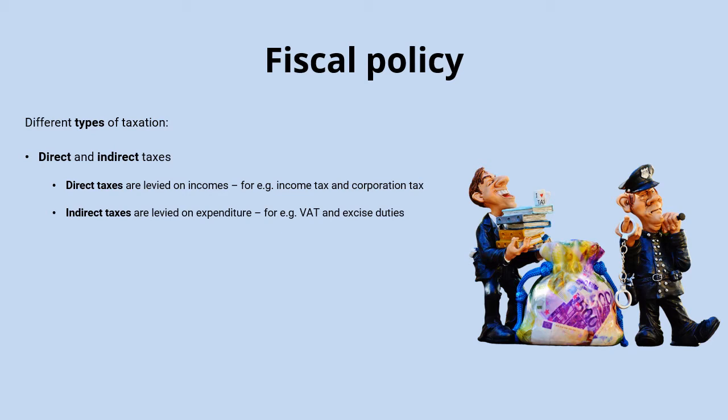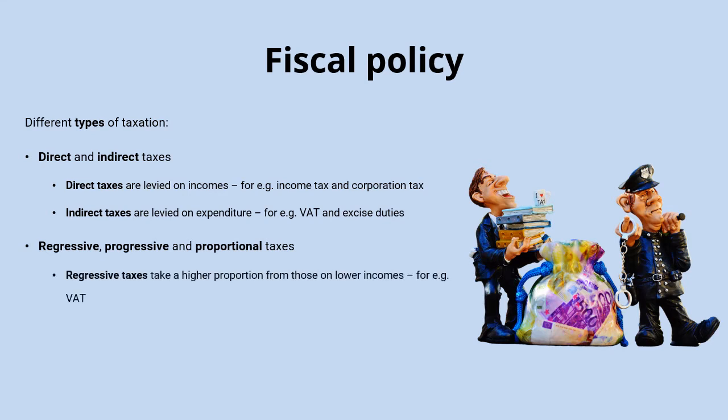With indirect taxes, you do actually see the money first, but then pay the tax when you buy products or services. We can also categorize taxes by their impact on levels of inequality and who shoulders the greatest burden. Regressive taxes take a higher proportion from those on lower incomes. VAT is a regressive tax — while the rate of VAT is the same for everyone, a 20% tax on each purchase for someone who earns 20,000 pounds a year is a much bigger chunk of their income.